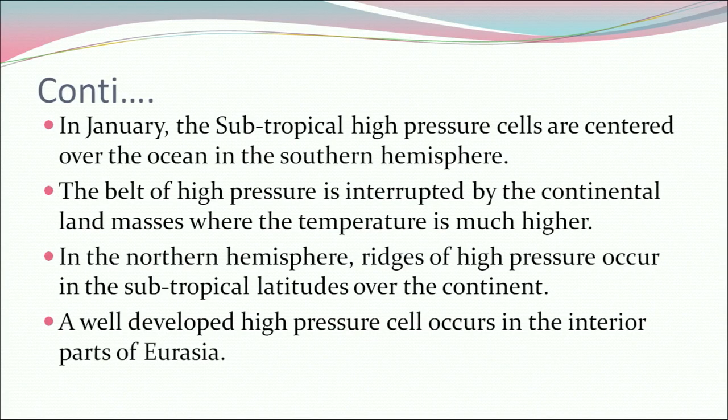In January, the subtropical high pressure cells are centered over the ocean in the southern hemisphere. The belt of high pressure is interrupted by the continental land masses where the temperature is much higher. In the northern hemisphere, ridges of higher pressure occur in the subtropical latitudes over the continent, with a well-developed high pressure cell in the interior parts of Eurasia.